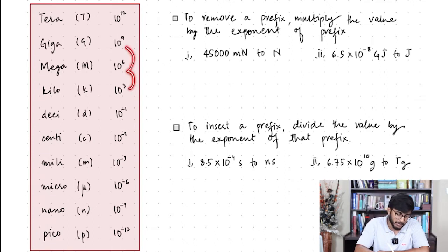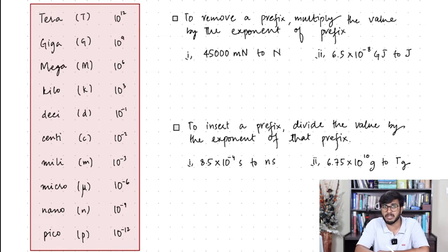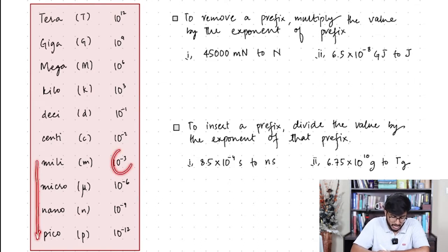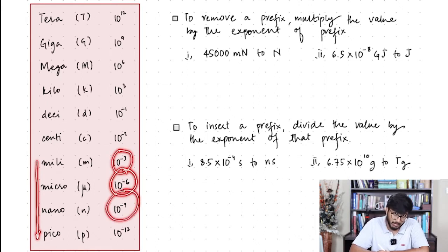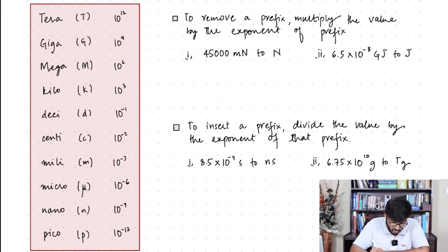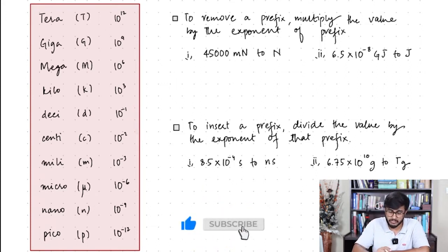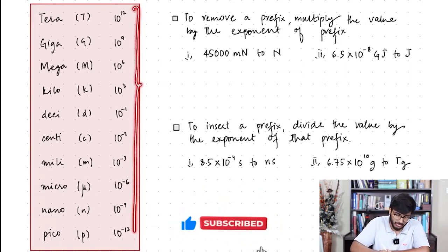It's easy to remember how the table works. From kilo to tera, the increments are in powers of three: kilo is 10³, mega is 10⁶, giga is 10⁹, tera is 10¹². The same pattern applies from milli to pico: milli is 10⁻³, micro is 10⁻⁶, nano is 10⁻⁹, and pico is 10⁻¹². Only deci and centi go from 10⁻¹ to 10⁻², so it's not difficult to remember the entire table.